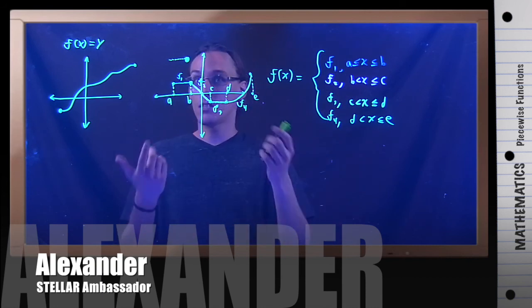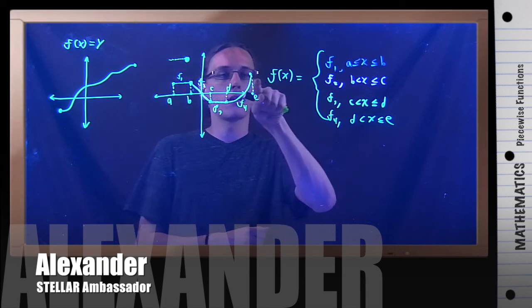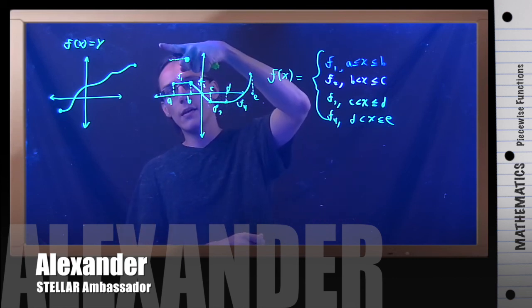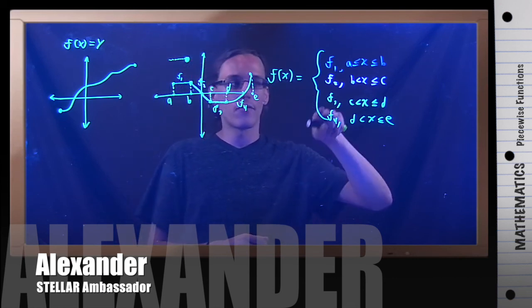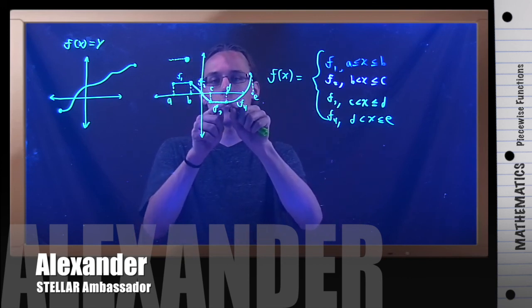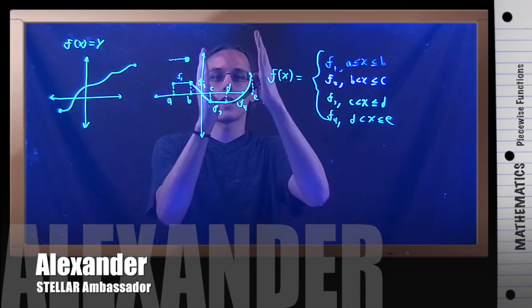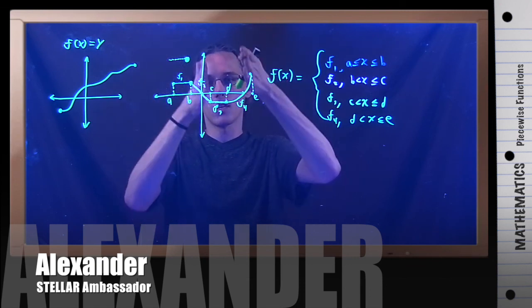So all of these could extend, right? If I just graphed F1, it would just keep going across. If I just graphed F2, I'd keep having a line like this. If I just graphed F3, it would keep going like this. And if I just graphed F4, it would continue to be a parabola like that. But we're not doing that because we're cutting these and pasting them just in those sections.